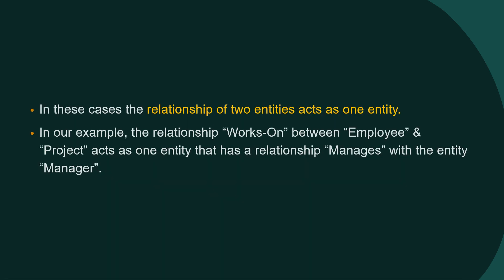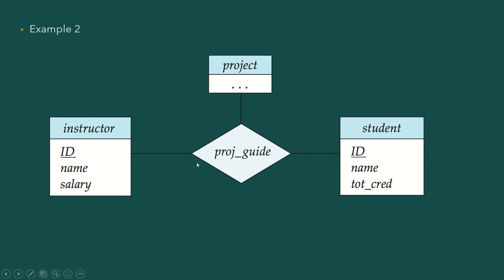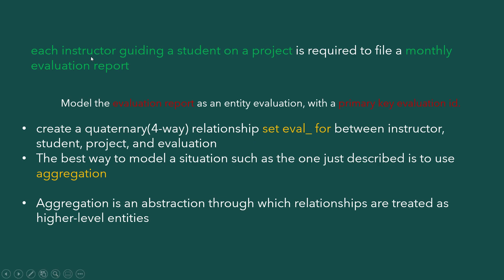Now we look at a second example — a ternary relationship between three entity sets. The first entity set is instructor, the second is project, and the third is student. The relationship can be called 'project guide,' meaning the instructor is the project guide of a particular student on a particular project. Here, the instructor guiding a student has to create a monthly evaluation report.